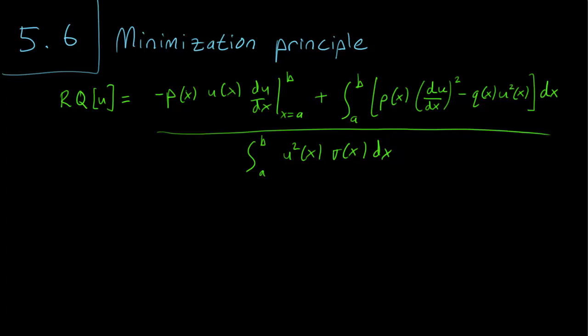In particular, if lambda is an eigenvalue and phi is an eigenvector corresponding to that eigenvalue, then what the Rayleigh quotient does is that it gives us lambda equals RQ of that phi.